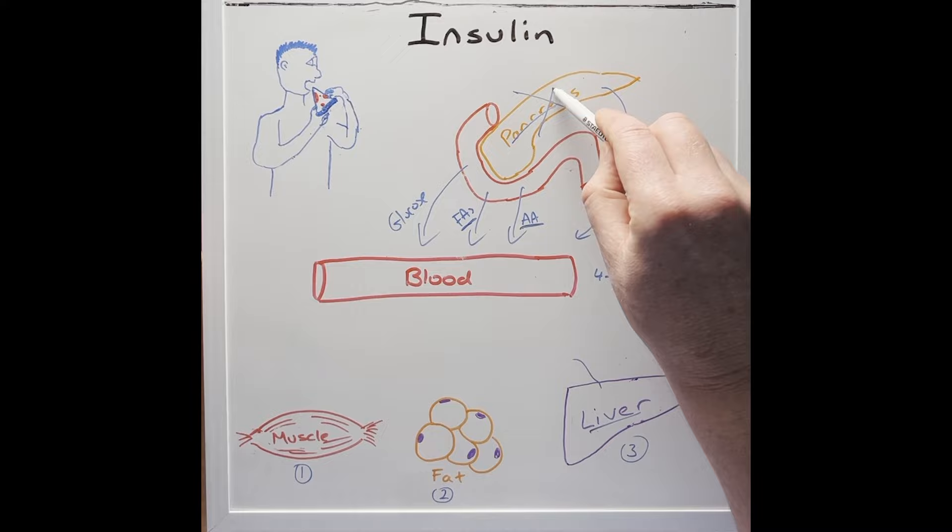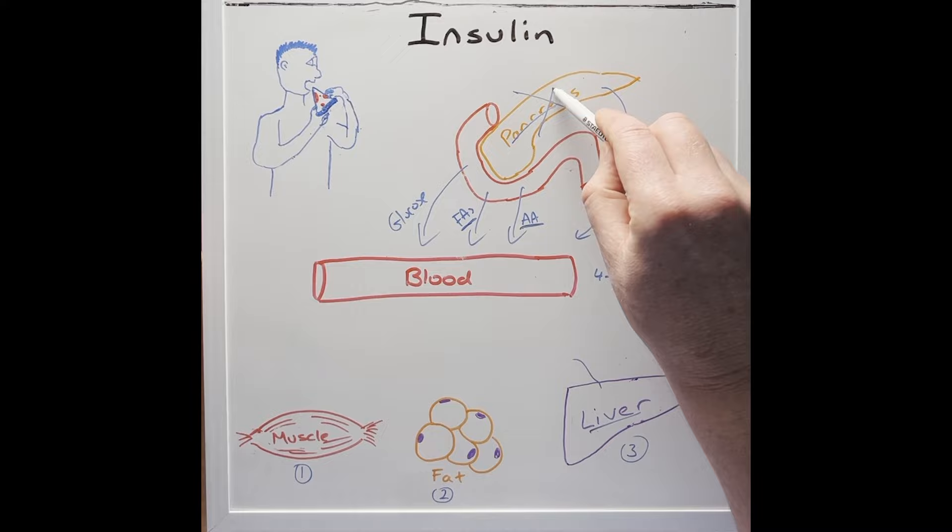If a person was unable to make insulin in the pancreas, or these cells become desensitised to it, it would lead to a condition known as diabetes.